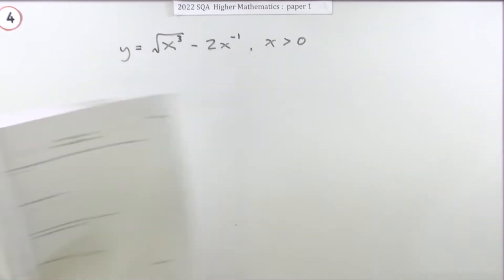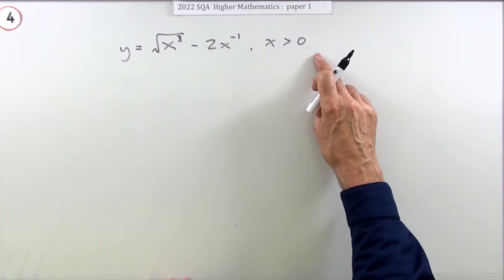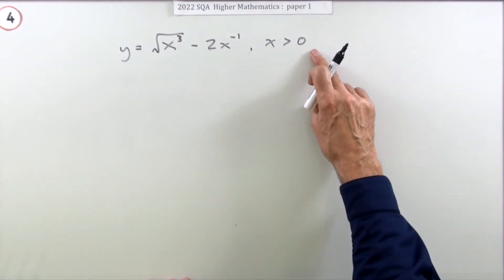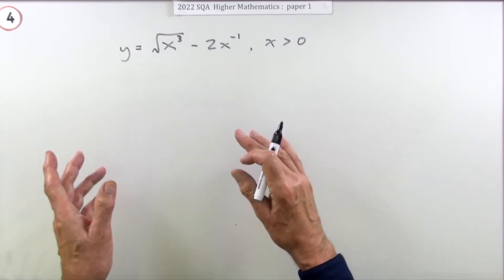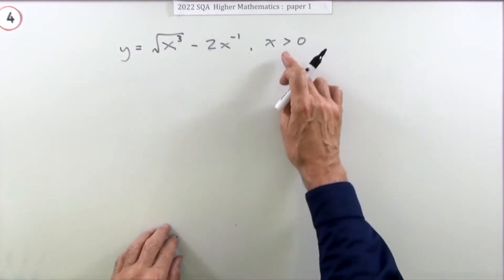You have to differentiate this expression. It says where x is greater than 0, but that doesn't matter for you in this question because you're not solving an equation, in which case you'd have to make sure that all your answers were greater than 0.